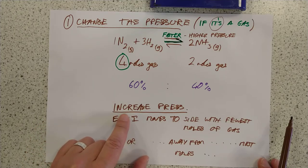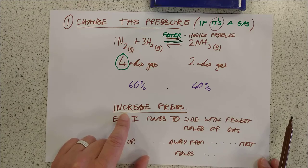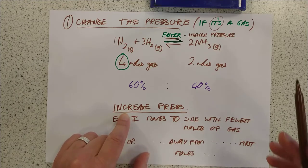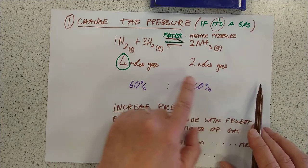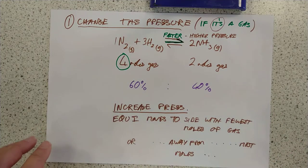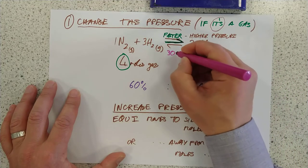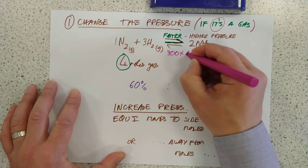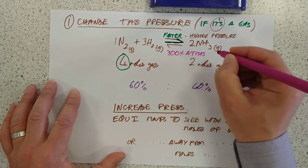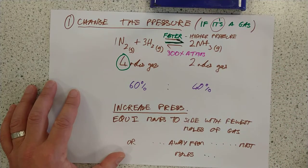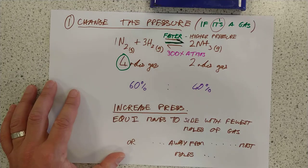So, that means decreasing pressure, the equilibrium would move to the side with the most moles of gas. So, if you drop the pressure, we'd move towards this side. By the way, just a little bit of real-world relevance. That is why this reaction runs at 300 times atmospheric pressure. Your bike tire has somewhere between 6 and 8 times atmospheric pressure. So, this is seriously squashed.